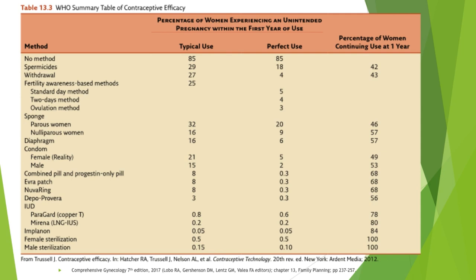Use of two methods, or dual method use, provides added contraceptive protection. Combining a hormonal method with a condom provides an additional health benefit of reducing sexually transmitted infections. Other multipurpose technologies are in development to concurrently prevent unintended pregnancy and reduce the risk of sexually transmitted infections, particularly HIV.